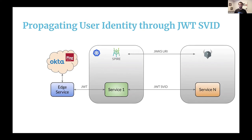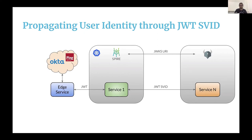What interests me in this demo is that every time I talk to folks about identity, the first thing that comes to mind is user identity. But Spire is not about that — Spire is about service authentication, providing identities to services. Earlier today, Andrew Jessup mentioned a working group dealing with delegated authentication and transitive identity. I see this demo as one of the use cases for why we need delegated authentication and transitive identity.